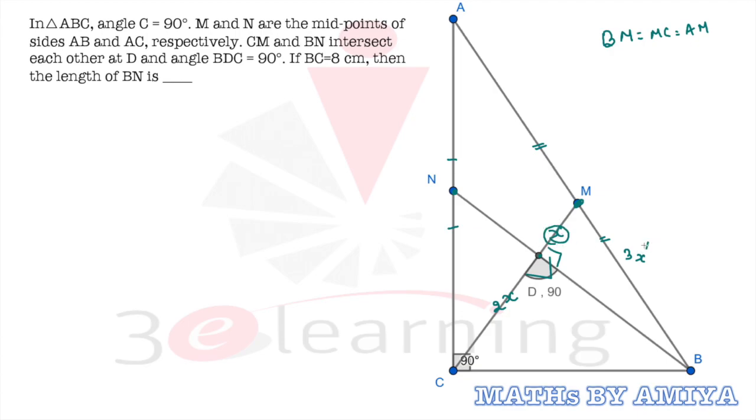So we have X. 3X is the hypotenuse. This must be nothing but by the Pythagoras theorem, in the MDB, this must be nothing but 2 root 2X. How comes? We can say BD square plus MD square is equal to MB square. We need to put MD is equal to nothing but X square. This one is nothing but 9X square is equal to BD square. So from here, we can say the BD is nothing but under root 8X is equal to 2 root 2X.